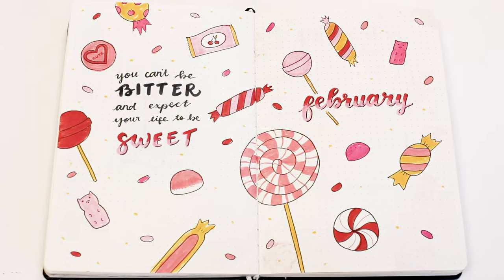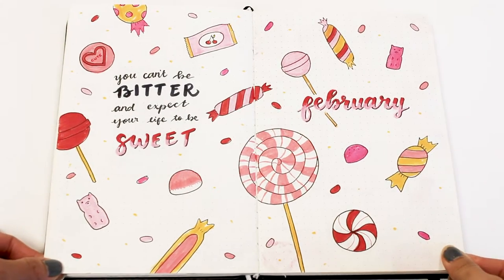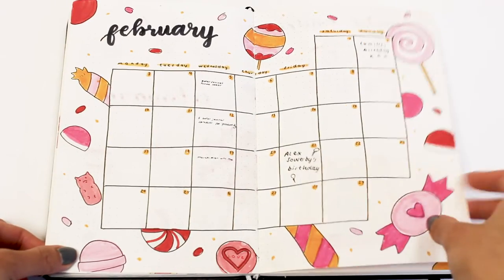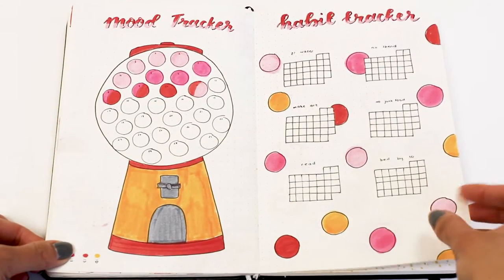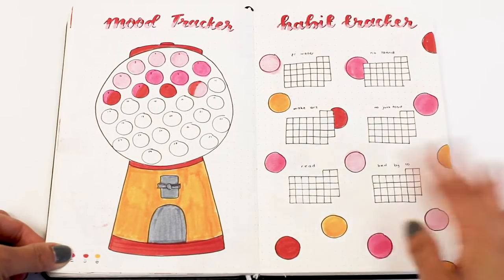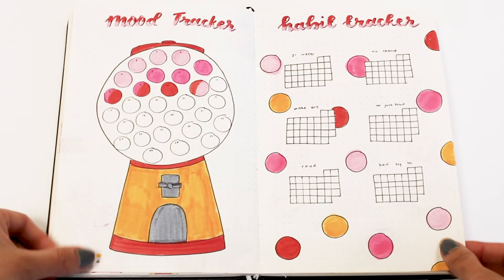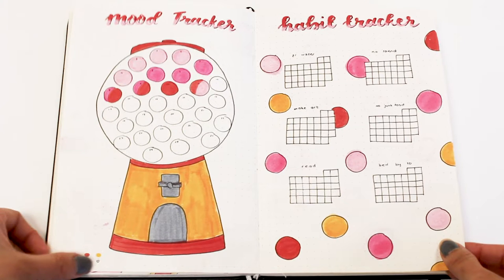Alright, before we get started here's a quick flip through of my February setup sort of filled in. February isn't over yet so I still have some gaps to fill in, but honestly February has been such a hard month for me as you can probably tell from my mood tracker colors. But it's not over yet so I guess I still have time to turn it around.